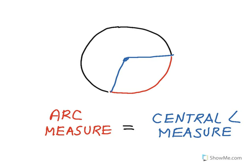An important thing to know about arc measure: we measure the arc in degrees, and an arc measure is exactly the same as the measure of its central angle. For example, if this central angle is 100 degrees, then this arc measure is also 100 degrees — it's a 100-degree arc.